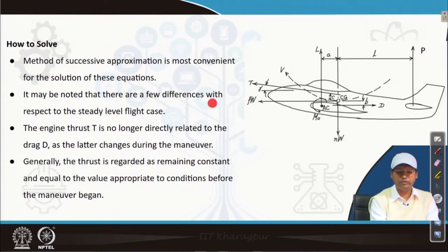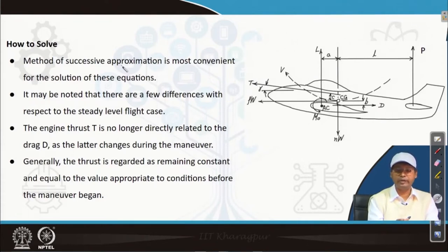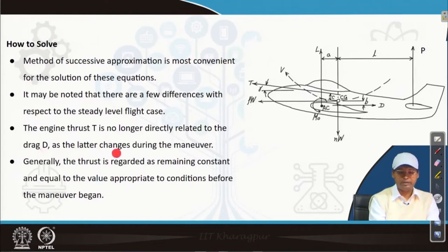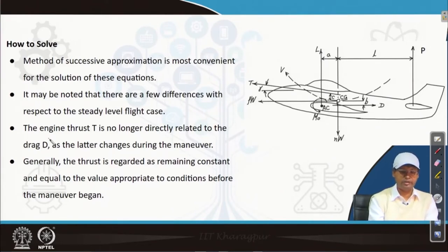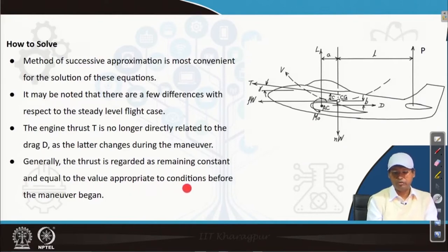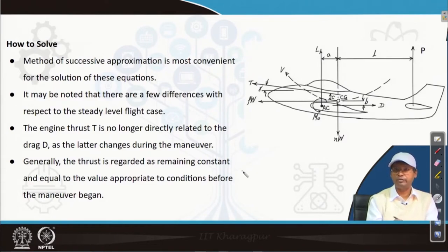It may be noted that there are a few differences with respect to the steady level flight case. The engine thrust is no longer directly related to the drag, as drag changes during the manoeuvre. Generally the thrust is regarded as remaining constant and equal to the value appropriate to conditions before the manoeuvre began. With this understanding we consider the thrust, and in some specific cases we will also assume other conditions.